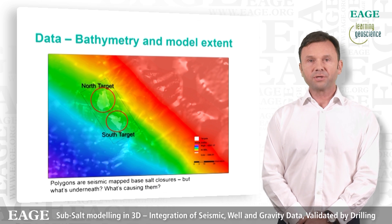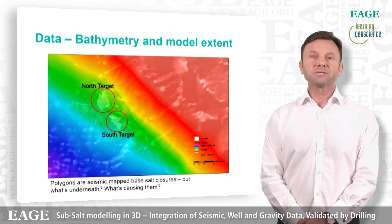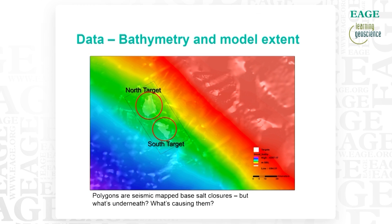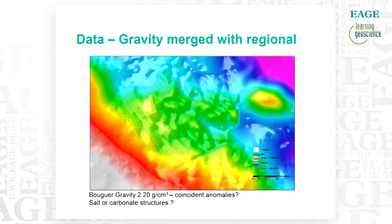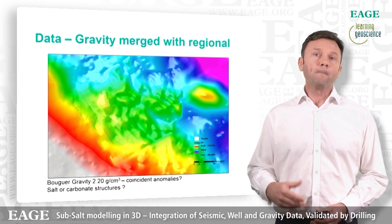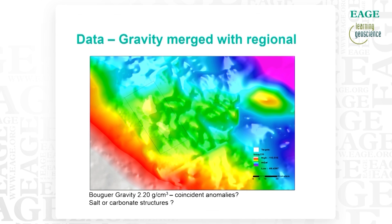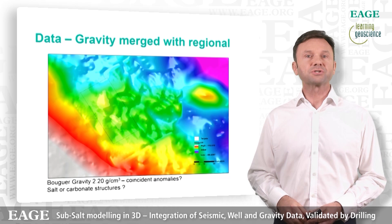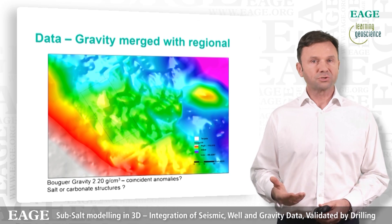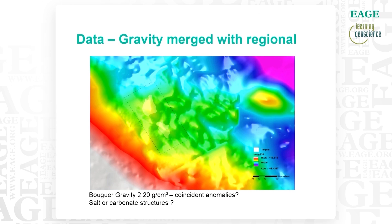There's the bathymetry, acquired with high-resolution 3D seismic. Those structures seen in the base salt closures are circled here in red — a north target and a southern target. We only have really good imaging down to that base salt, so we're quite interested in what's going on underneath. Early on in this process, it was noticed that at least the north closure corresponded with a gravity high. This map shows a merge of the high-resolution gravity data acquired with the 3D seismic acquisition, merged with regional data for continuity and reduction of edge effects. The north and south structures correspond nicely to gravity closures.